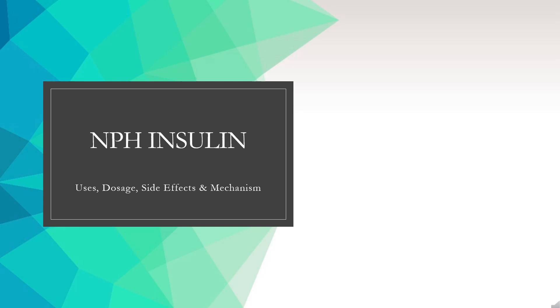Insulin human is a recombinant form of human insulin used to control hyperglycemia in diabetes mellitus.